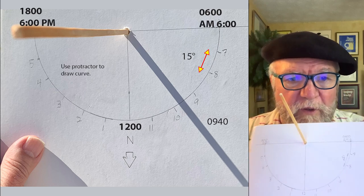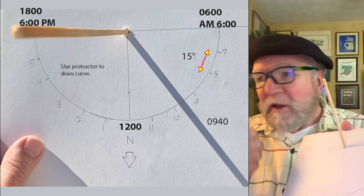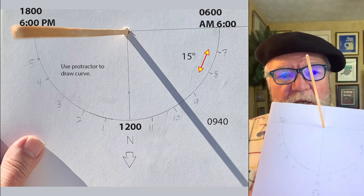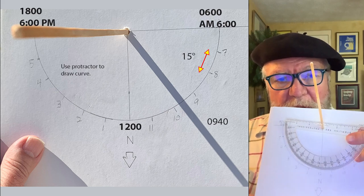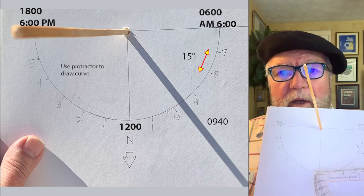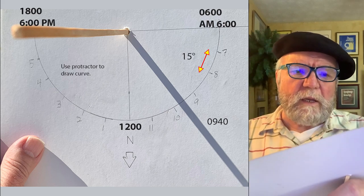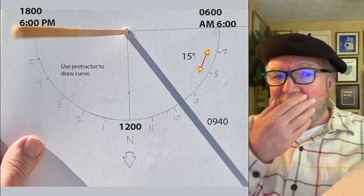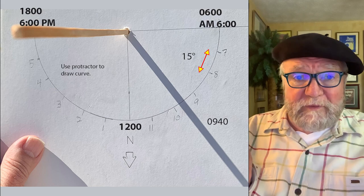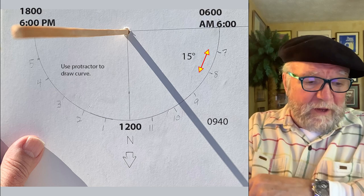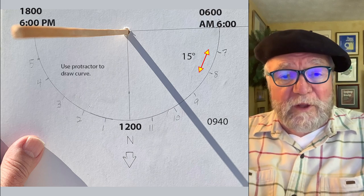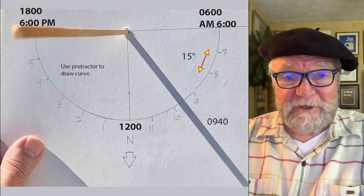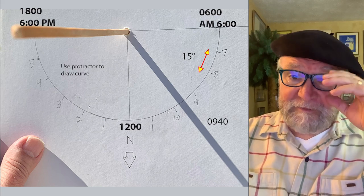I think it helps even more if you build one yourself. I've enhanced it a little and have a picture of it out in the sun, but it's very simple to do. You simply take a protractor, draw a little curve, and at the very top is 12 o'clock. Over on one side it's 6 a.m. and on the other it's 6 p.m. That gives you something to tell solar time with, and it's as good as anything.